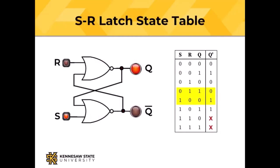The state table has S, R, and Q on the left side, and on the output side we have Q prime — the next state of Q. We look at S, R, and the current state of Q, and the table tells us the next state. If S is 0, R is 1, but Q is already off — Q doesn't change, it stays off. So pressing the same input twice doesn't change anything, as answered by the state table.